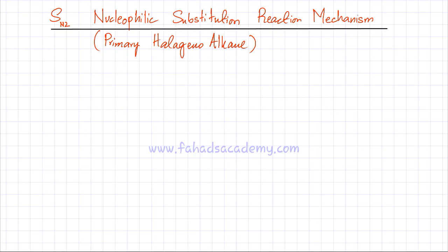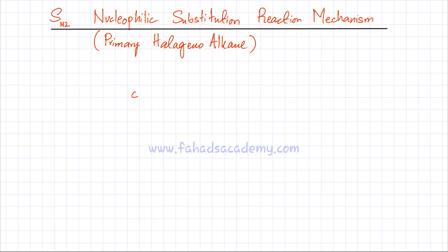The first thing you need to know is that we need to define what is a primary halogonoalkane. A primary halogonoalkane is a halogonoalkane. In a halogonoalkane, there is a carbon chain and one of the carbon atoms is bonded to a halogen. Let's pick Cl — chlorine, which is from group 7.